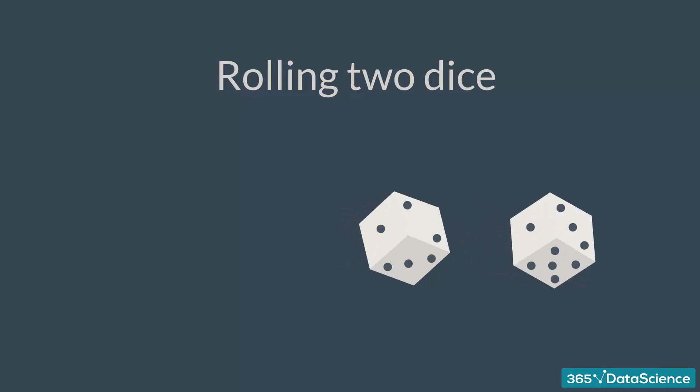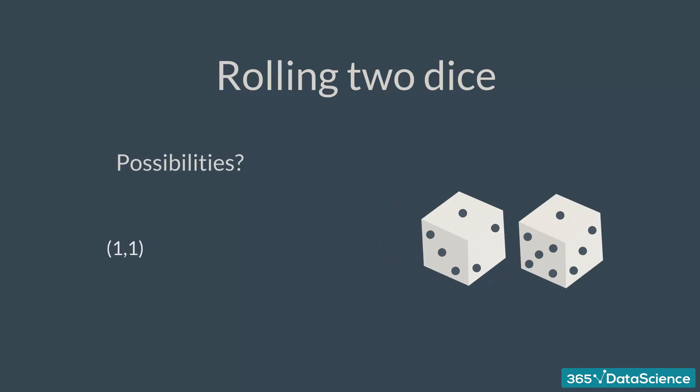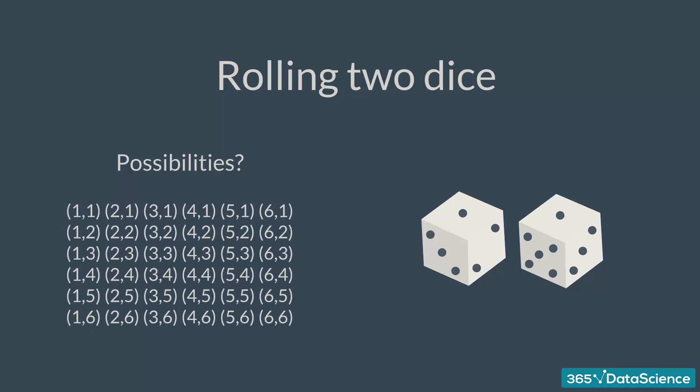Alright, now think about rolling two dice. What are the possibilities? One and one, two and one, one and two, and so on. Here is a table with all the possible combinations.